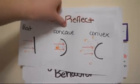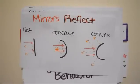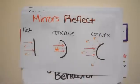Mirrors use regular and diffuse reflection to create images. There are three types of mirrors, flat, concave, and convex.